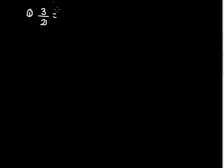The first example is dividing 3 by 21. To simplify fractions, whether it's a number or algebraic expression, we write it as a prime factor. So 3 I can write as 3 times 1, and 21 is 3 times 7. If you have a 3 and a 3, this is basically 3 divided by 3, which is 1. So the final answer is 1/7.